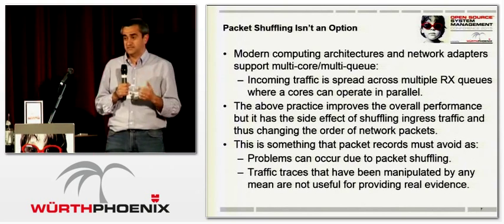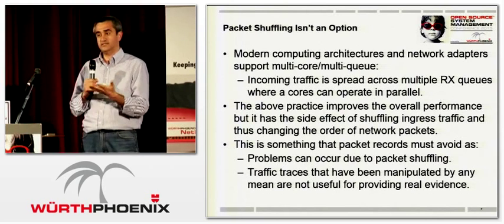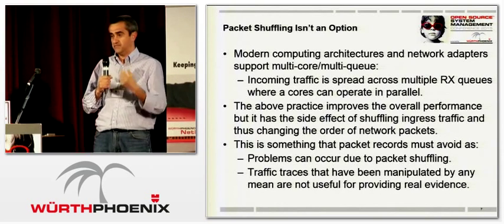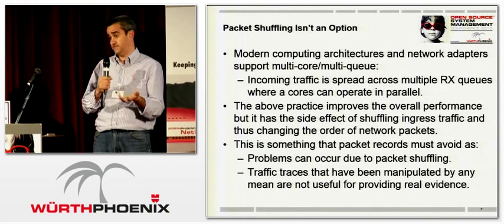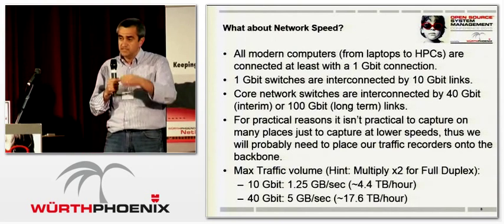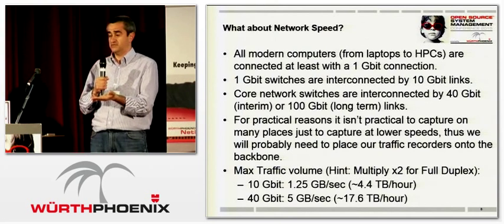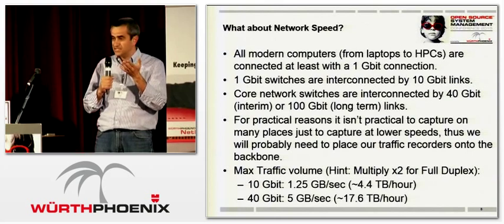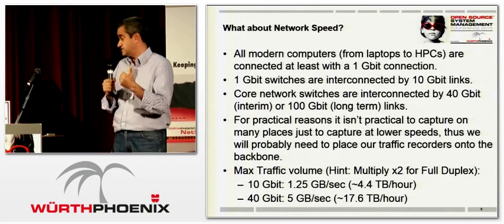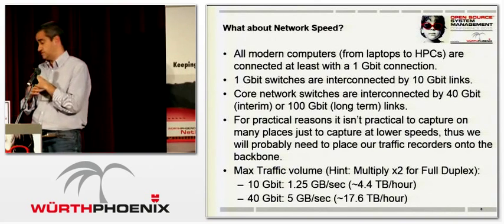Now the interesting part starts. Problem number one: packet shuffling is not an option. Wireshark and other tools sit on top of the operating system, which tries to maximize performance by maximizing utilization of every individual core. The same happens on the network adapter. So the packets you receive are not guaranteed to be in the same order as observed on the network. They contain the same data, but not in the same order. We have to make sure this problem does not occur, and Wireshark with TCP dump do not guarantee that at all.